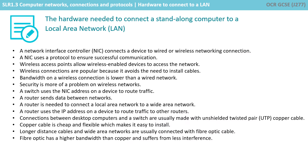So let's just recap what we've learnt. A network interface controller connects a device to a wired or wireless network connection. A network interface card uses a protocol to ensure successful communication. Wireless access points allow wireless enabled devices to access the network. Wireless connections are popular because it avoids the need to install cables. The bandwidth on a wireless connection is lower than a wired connection, and security is more of a problem.